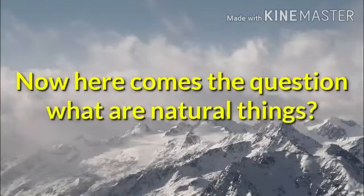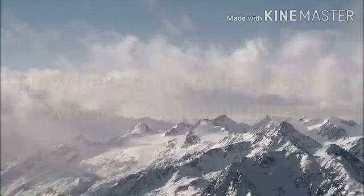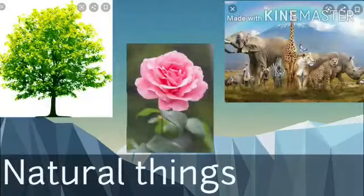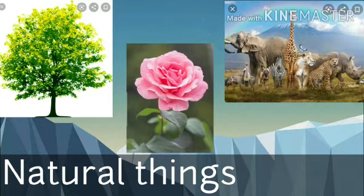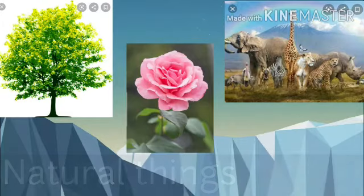Now here comes the question: what are natural things? Things given by nature are called natural things. For example, tree, flower, and animals.